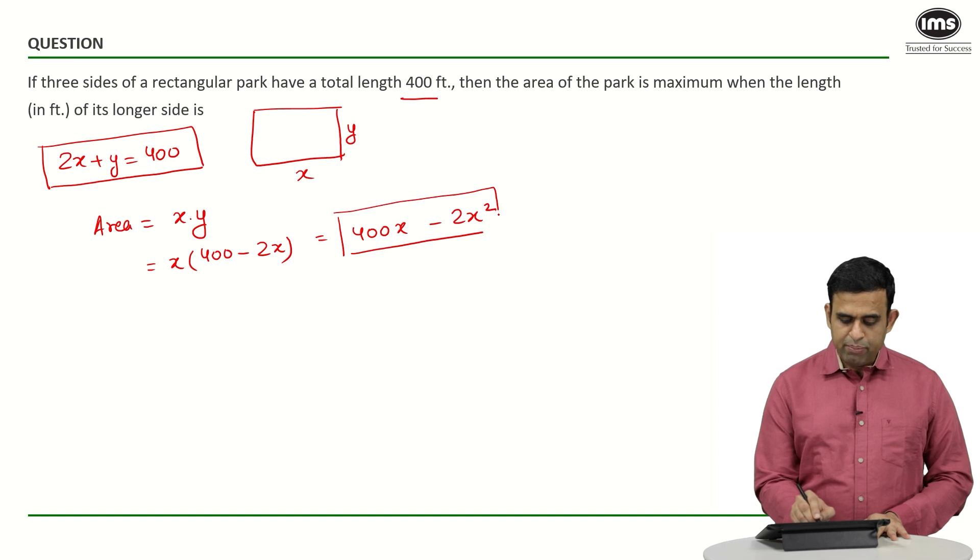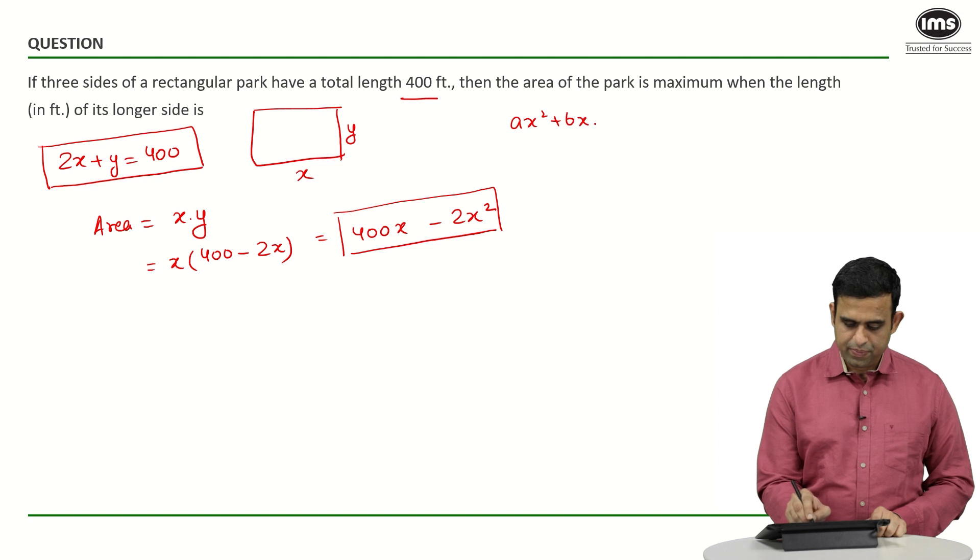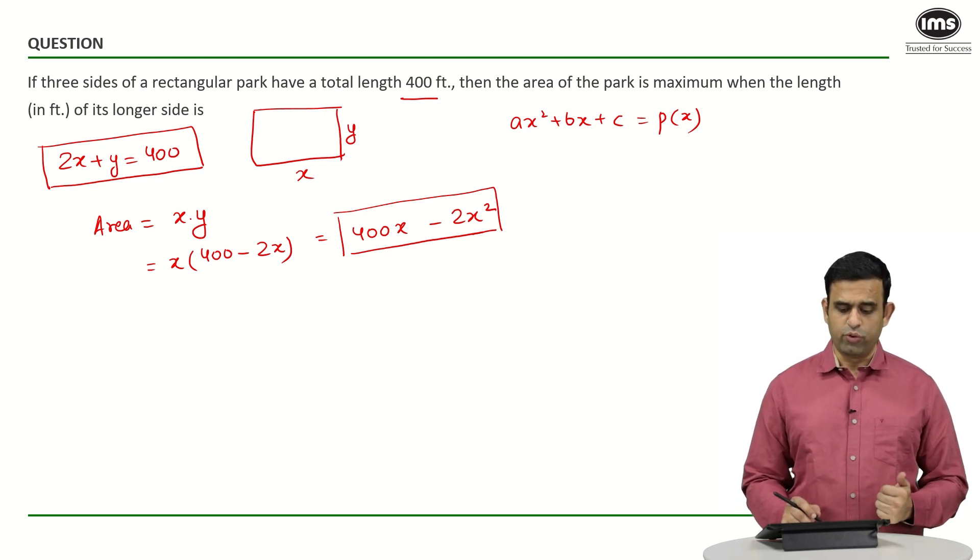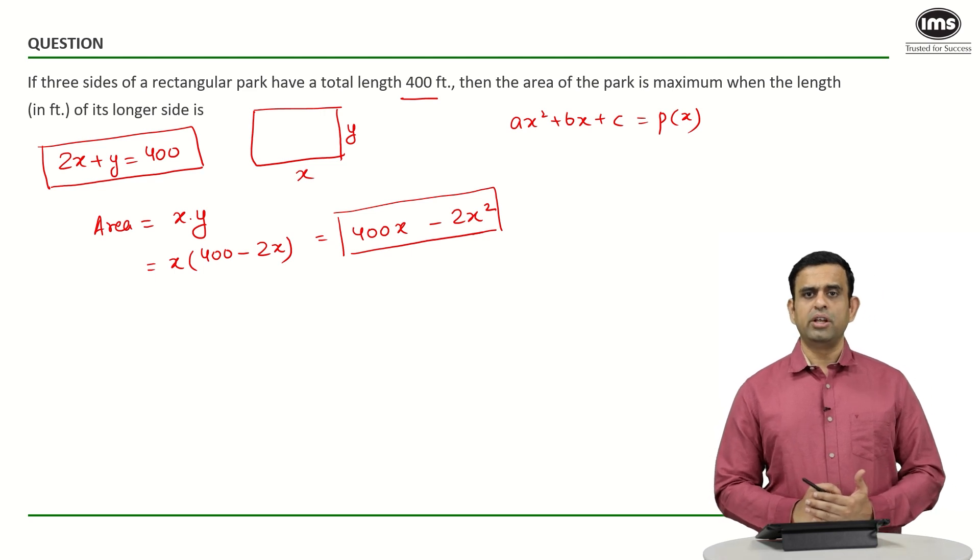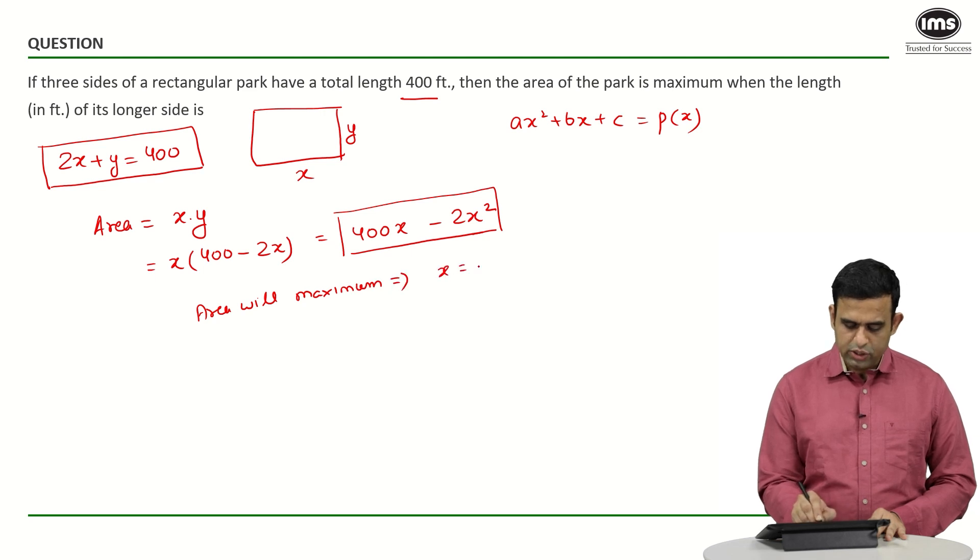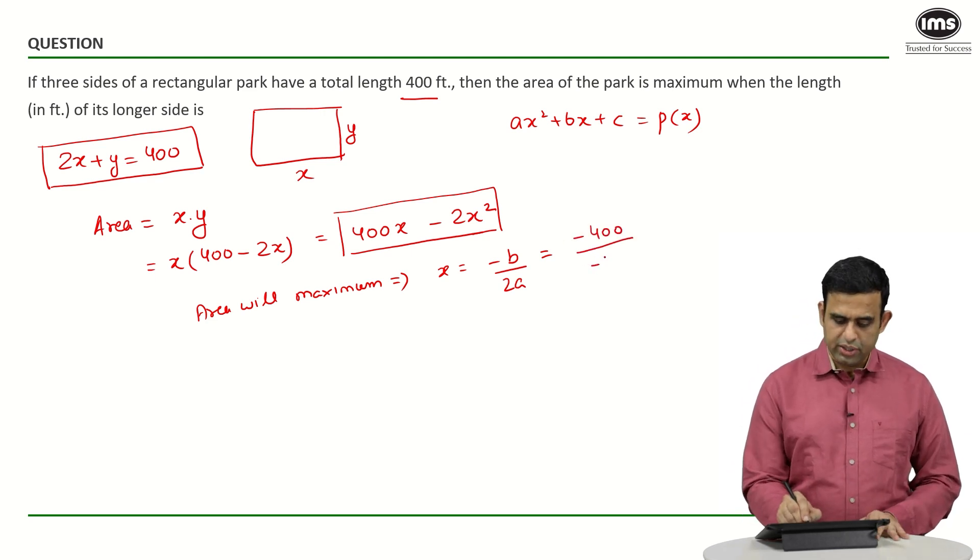If I look at the quadratic, my coefficient of x squared, or a, is minus 2. The coefficient of x, or b, is 400, and the constant term is 0. The area will be maximum for x equals minus b by 2a, which equals minus 400 upon 2a. 2a is minus 4.